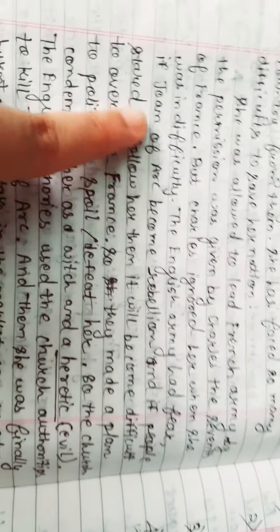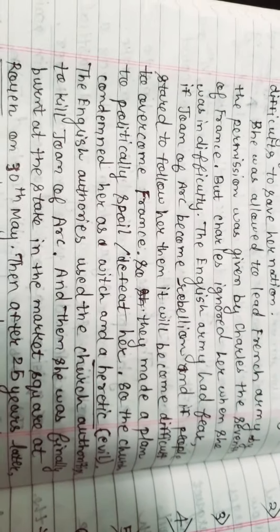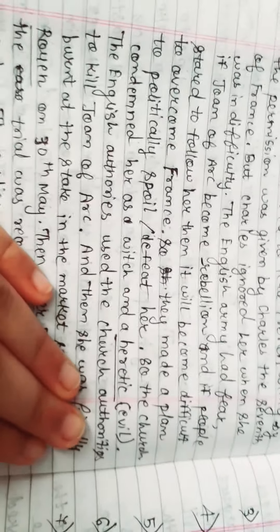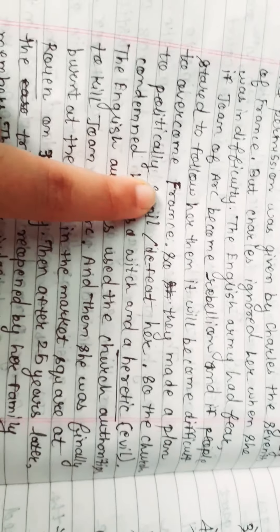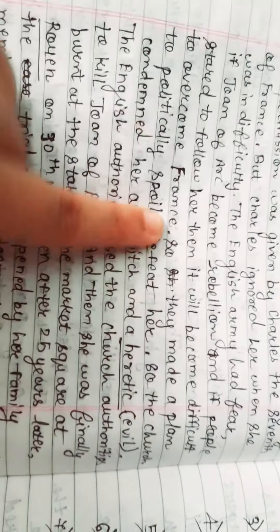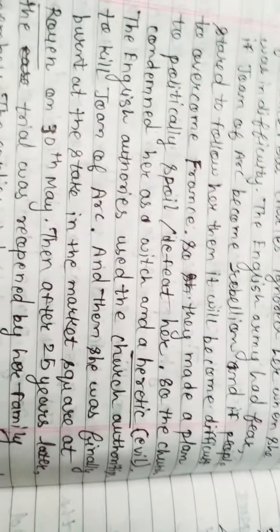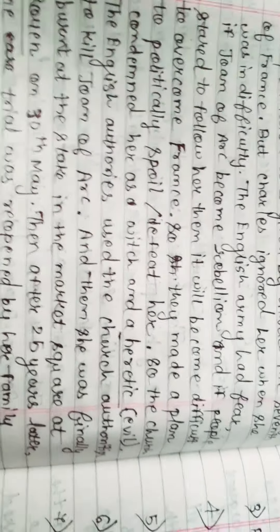The English army had fear. If Joan of Arc became a rebel and if people started to follow her, then it will become difficult to overcome France. Englishmen feared that if people started to follow Joan of Arc, then their all plan will spoil. They will not be able to capture France.